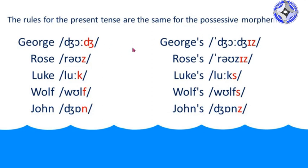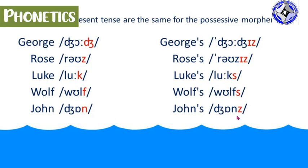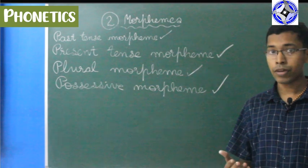Possessive morpheme examples — repeat after me: George — George's. Rose — Rose's. Luke — Luke's. Wolf — Wolf's. John — John's. Dear friends, I think today's class was clear to all of you.